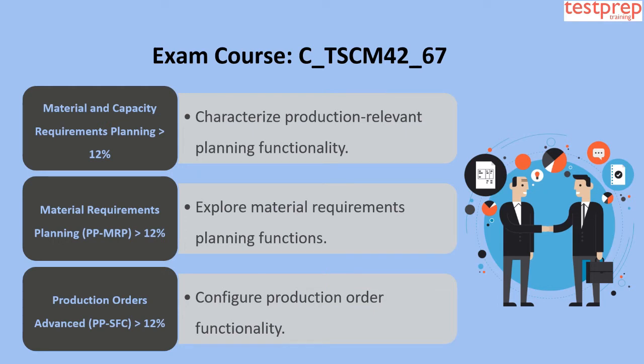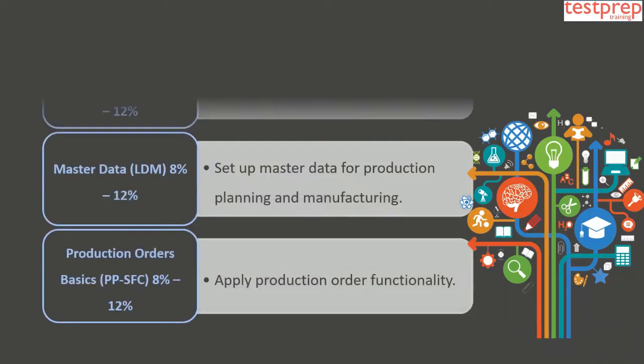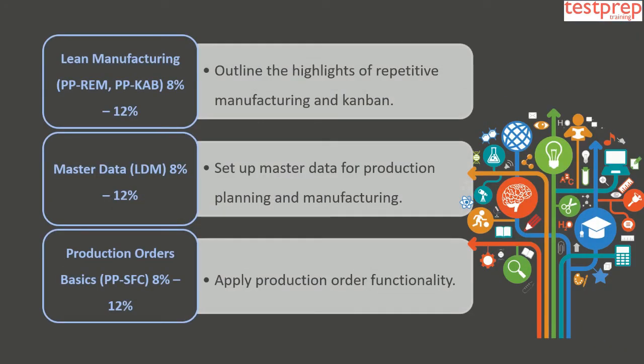Domain 4 is Lean Manufacturing PP-REM / PP-KB, comprising 8 to 12 percent of the exam, outlining the highlights of repetitive manufacturing and Kanban. Domain 5 is Master Data LDM, also 8 to 12 percent, covering the setup of master data for production planning and manufacturing.